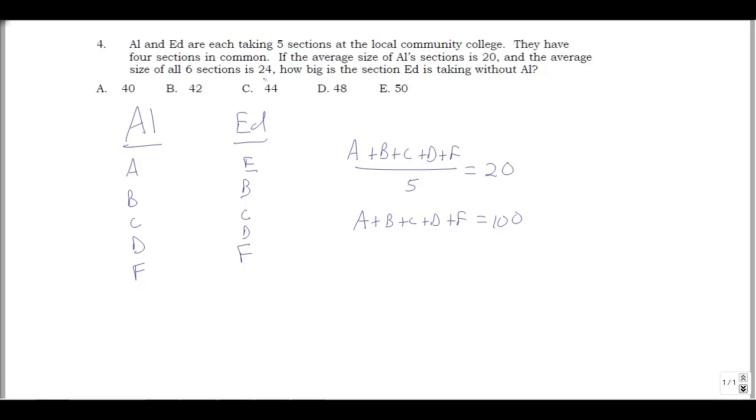Average size of all 6 sections is 24. Well, all 6 is A plus B plus C plus D plus E plus F, divided by 6. That's 24. So we get A plus B plus C plus D plus E plus F, 6 times 24 is 144.